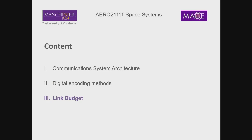On Monday we looked at the communications system architecture — the various structures: the ground station, the satellite, the link between them, and the different ways to arrange that depending on orbit type. We also looked at how we encode signals — taking an analogue signal and making it digital, how we digitise it, and transmit it. If it's from satellite to ground, it's called a downlink; from ground station up to the satellite, we call it an uplink.